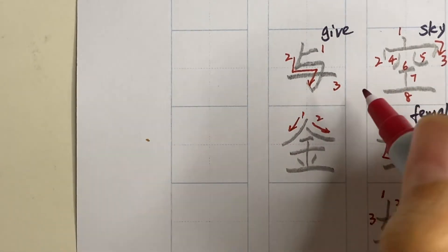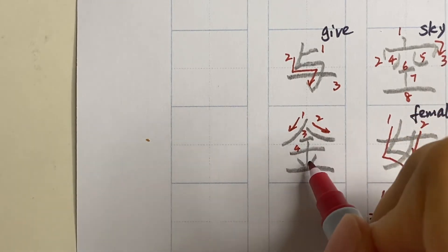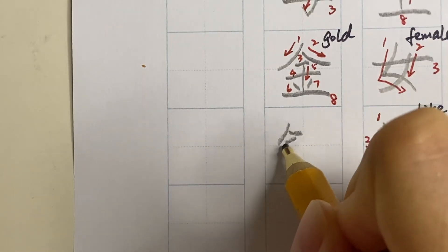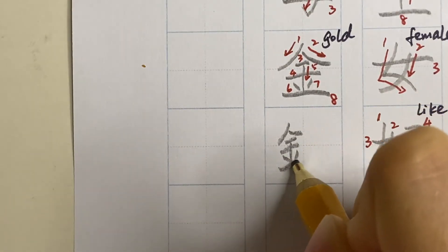This word can be read as kane or kin. It means gold or money.